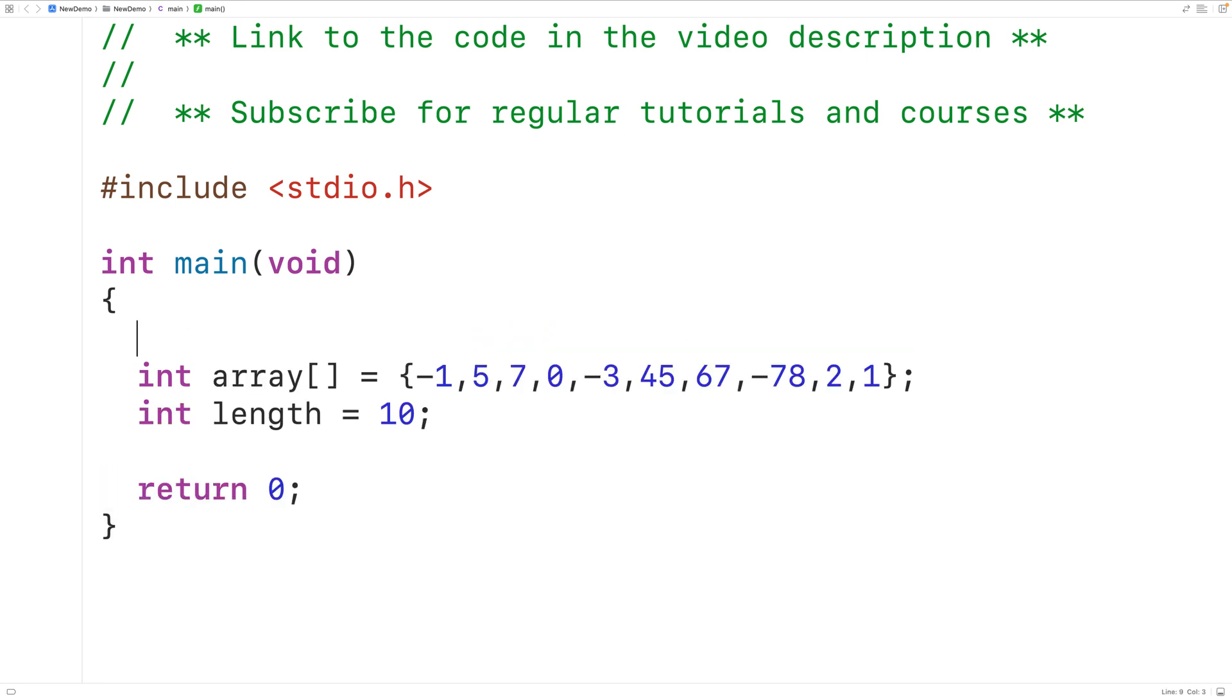Now each array element is stored at an index. So for example negative 1 here is stored at the index 0, 5 is stored at the index 1, 7 is stored at the index 2, and so on for the rest of the elements in the array.